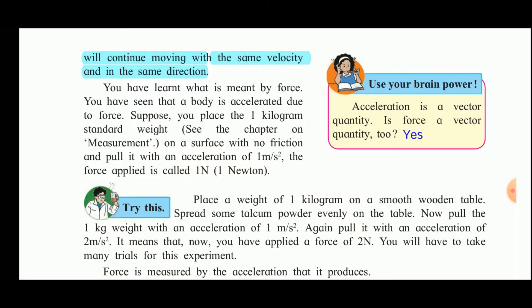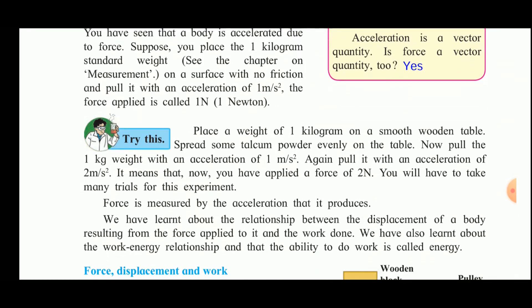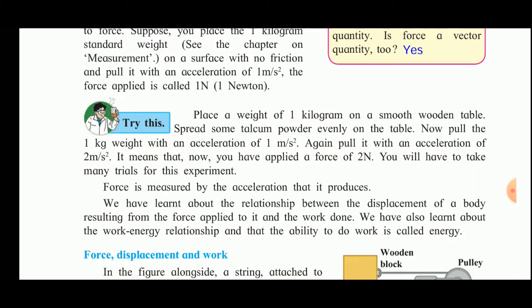Now try this experiment: place a weight of one kilogram on a smooth wooden table and spread some talcum powder evenly on the table. Pull the one kilogram weight with an acceleration of one meter per second square, then pull it with an acceleration of two meters per second square — this means you have now applied a force of two Newtons. You will need to take many trials for this experiment.